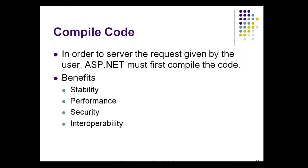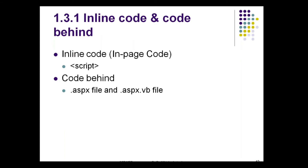So these are the basics of compiled code. Now, there are two important things present in compiled code — that is inline code and code behind. What is inline code? Inline code is also known as in-page code. As I told you, classic ASP supported mixed layout — HTML is in the same file as classic ASP code between angle bracket percentage tags — so HTML presentation code, designing code, business logic, and client scripting are all in the same file.